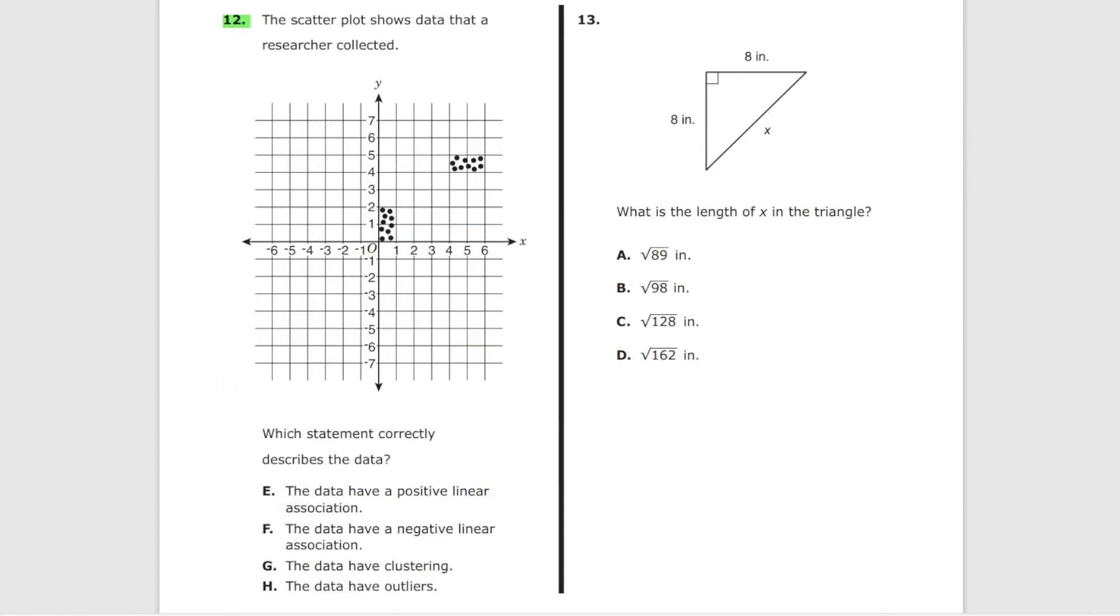Problem number 12. The scatter plot shows data. Which statement correctly describes this data? E: The data have a positive linear association. It would be true if it followed this line for example but it's wrong. So E is wrong. F: The data have negative linear association. So if the data followed something like this for example it would have been correct but it's clearly incorrect.